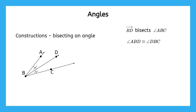We also have to make sure we're writing our angle names correctly. Whenever we're writing an angle, we have to write the point at the vertex of the angle in the middle of the three points we write down. For example, if we accidentally rearranged these letters and wrote angle BAD or angle DAB, what angle would we be referring to? We would be talking about an angle with point A at the vertex, which is not what we want.